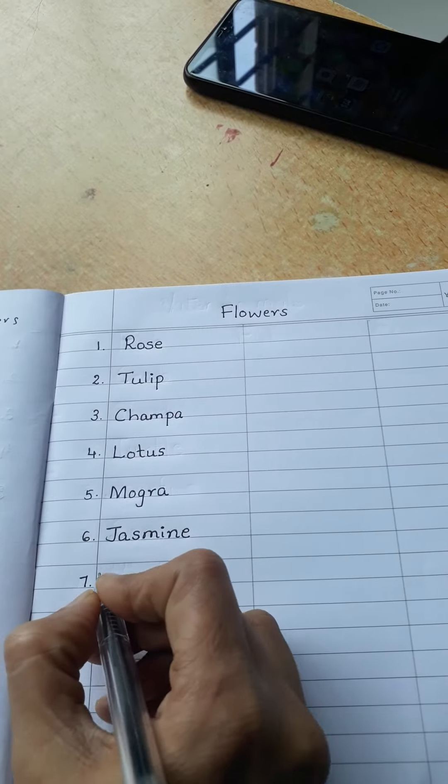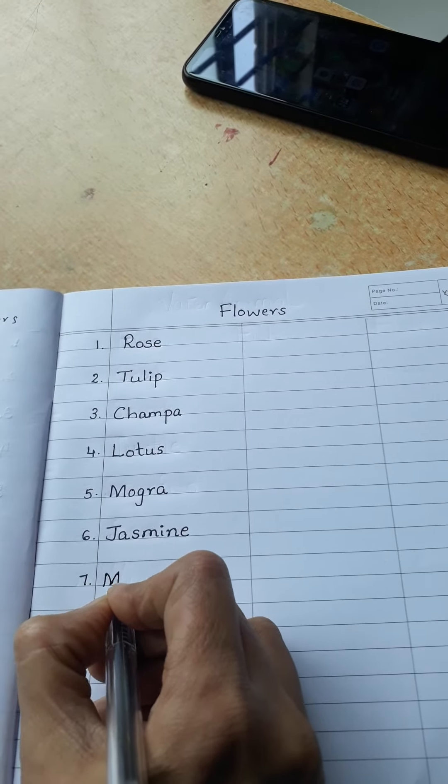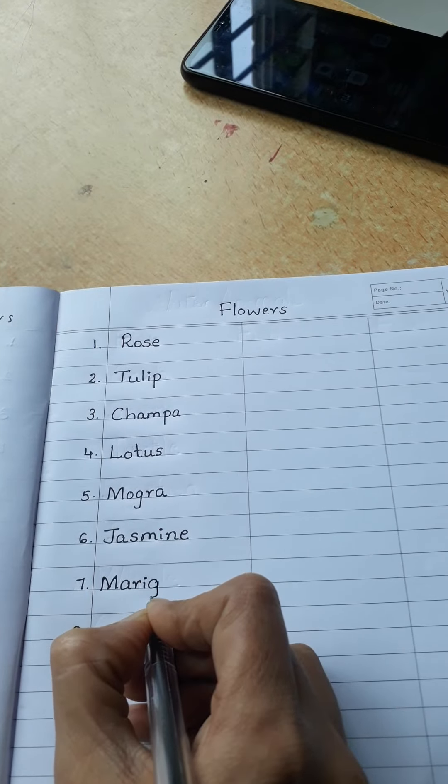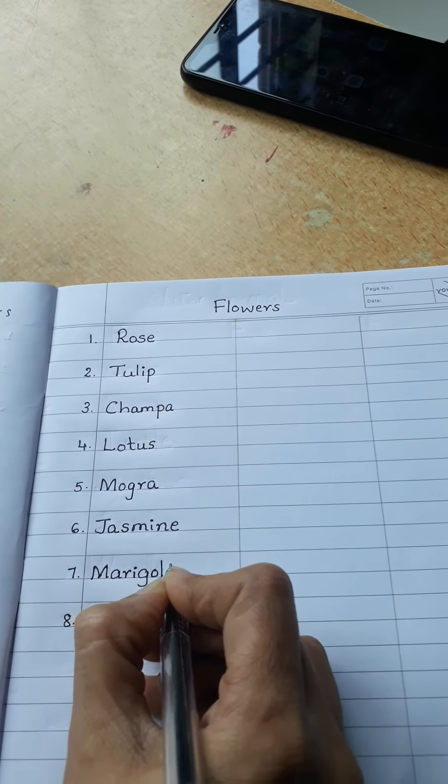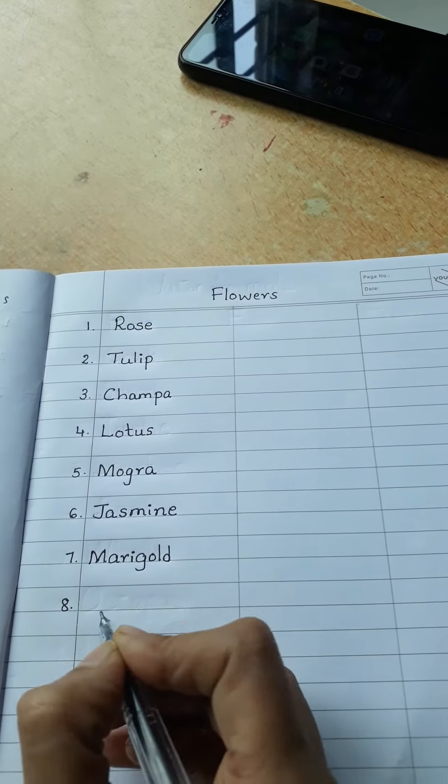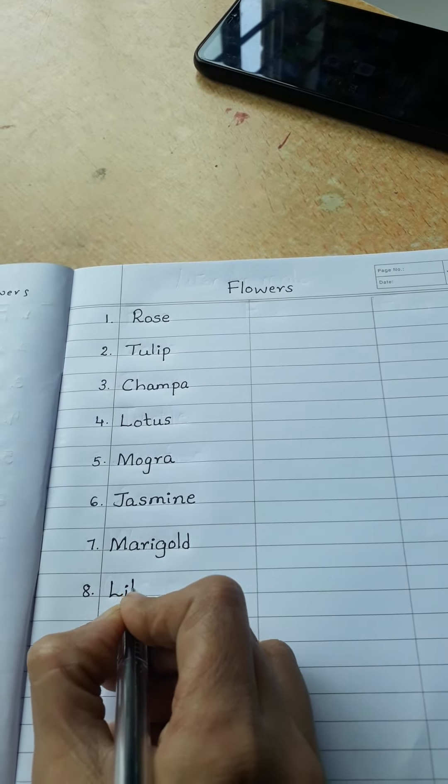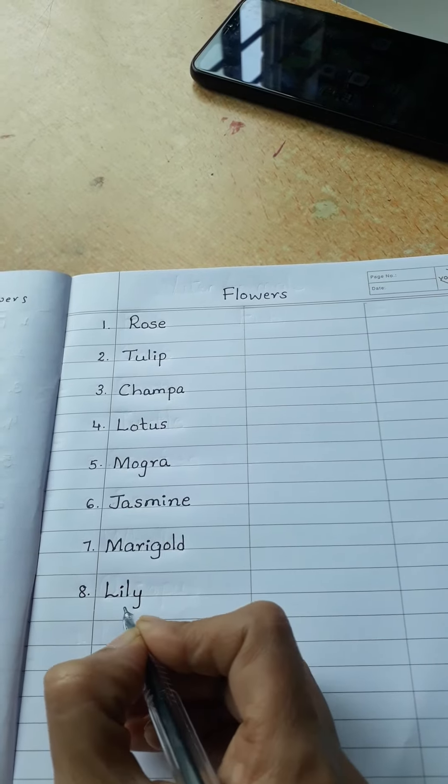Seventh one is marigold. M-A-R-I-G-O-L-D, marigold. And the last one is lily. L-I-L-Y, lily.